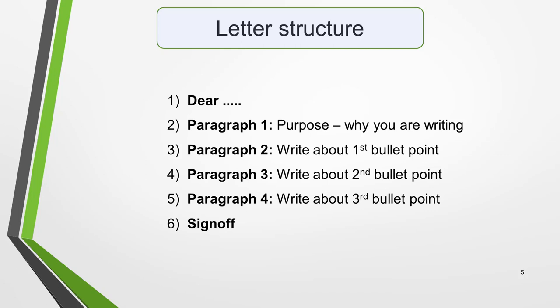Use this easy-to-remember six-part structure. Start with the greeting, which will be 'Dear' whoever you are writing to. In paragraph one, state the purpose of the letter — that is your reason for writing it. In paragraph two, write about the first bullet point. In paragraph three, write about the second bullet point. And in paragraph four, write about the third bullet point. Then finally, sign off your letter. All you need to do to create your plan is to add in the details from the question.